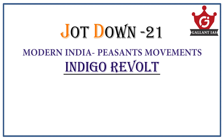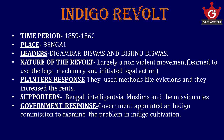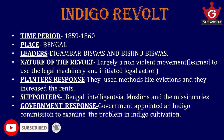From the previous year questions, we know that various movements and revolts are an important area for UPSC. So let's start. The Indigo Revolt took place in Bengal in 1859 to 1860. You should focus on this timeline because it is a very important fact for chronology-based questions.